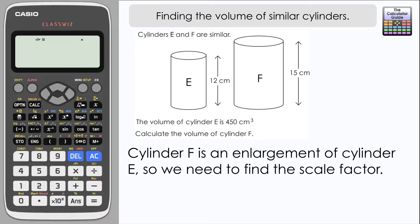We need to find the scale factor and we're given a comparison of the two heights of the cylinders. E is 12 centimeters high and F is 15 centimeters high, and from that we can work out the scale factor for the height of the cylinders.